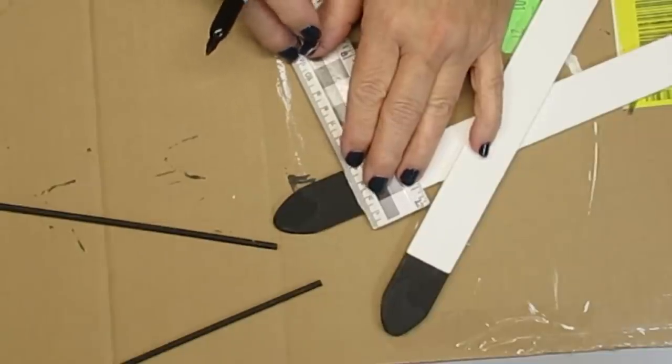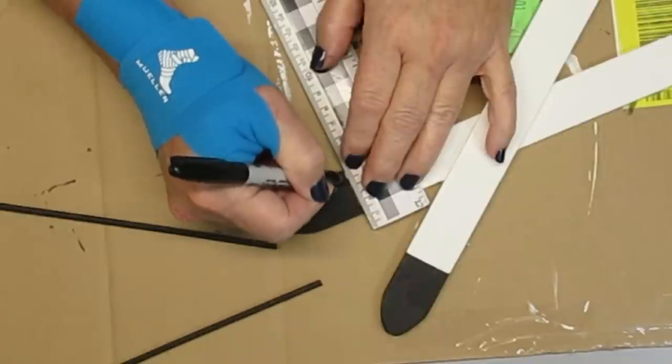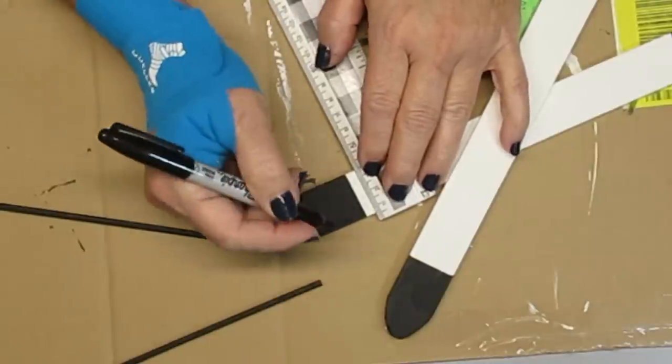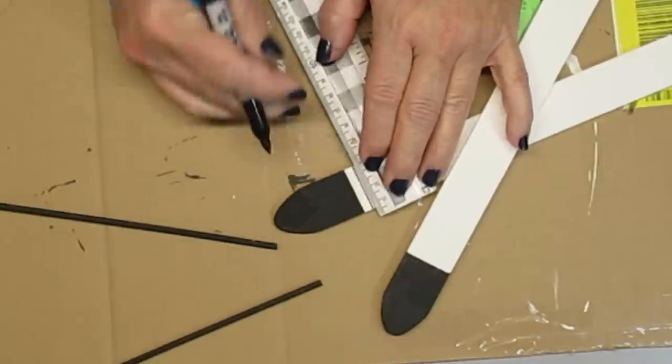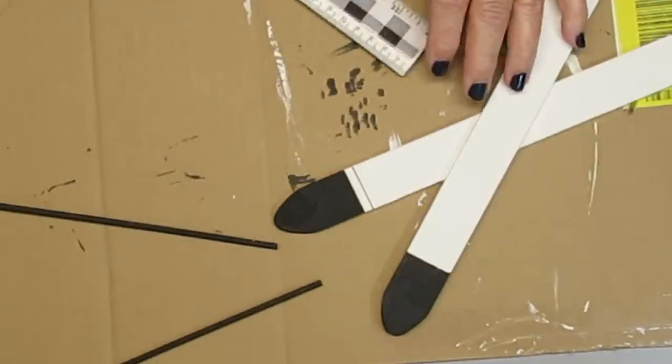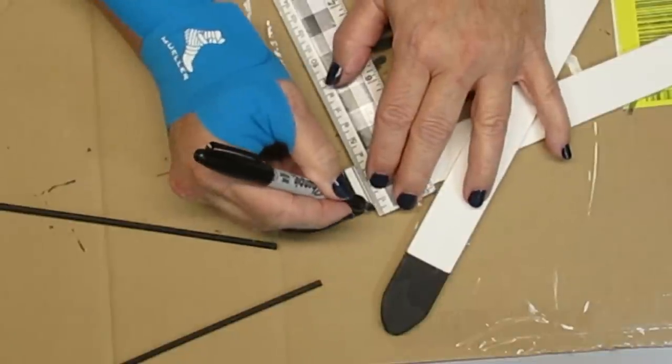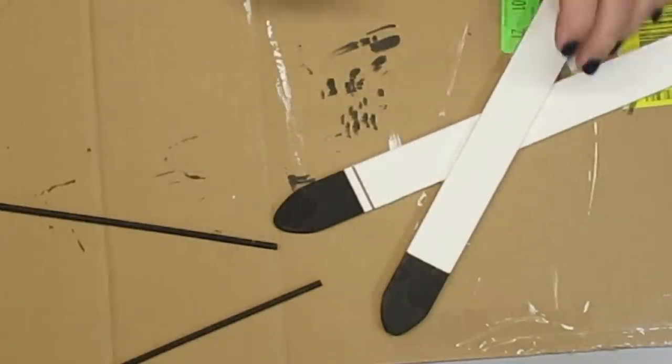I decided to take my black sharpie marker and a ruler and create some straight lines right where the black and white paint meet. And then because the inspiration has a stripe, I'm going to just move my ruler down about a quarter of an inch and just draw a couple of lines as a stripe. And this is part of the uniqueness of these skis. I think the design is super cute.